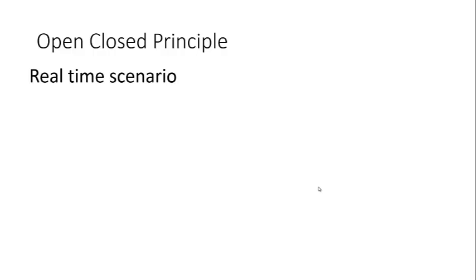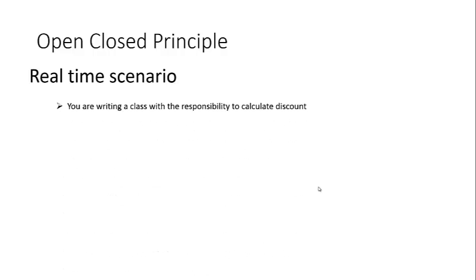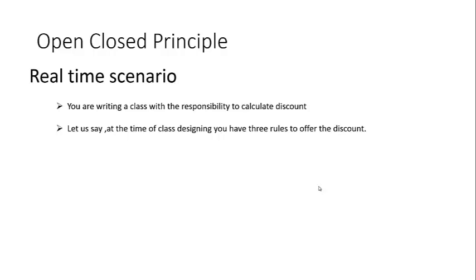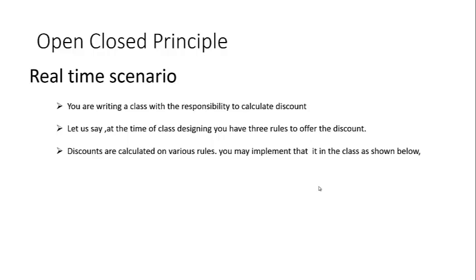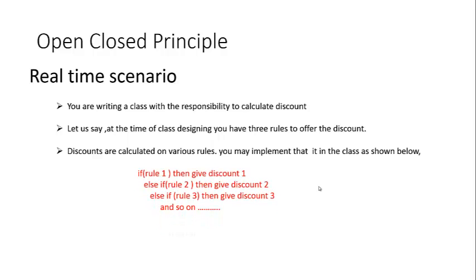Let us try to understand this definition in a real-time scenario. Suppose you are writing a class with the responsibility to calculate discount. At the time of class designing you have three rules to offer the discount. Discounts are calculated on various rules. You may write code something like: if rule 1 then give discount 1, else if rule 2 then give discount 2, else if rule 3 then give discount 3 and so on.